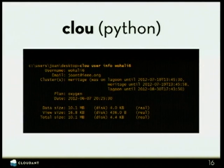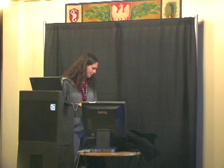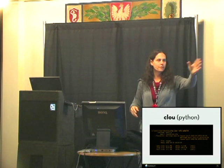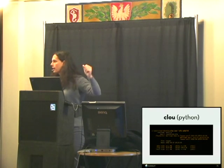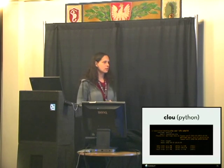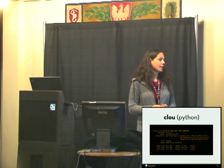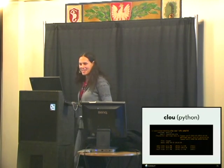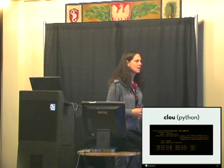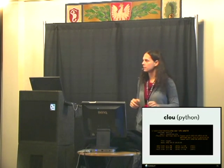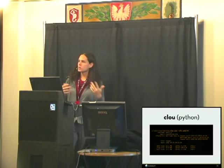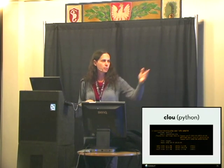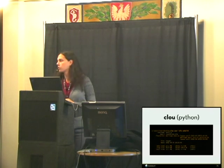We have an internal tool we've written called Clue — the Cloudant command line utility. It has your standard command line interface. You can say things like 'Clue user info' and give it a username, and you'll get back things like the username, their email address, what cluster they're on. We've got a number of multi-tenant clusters and private clusters as well. You can also see the history of where somebody's been, whether they're paying or not, the date the account was created, and a rough estimate of what the data size is at this particular instant in time.